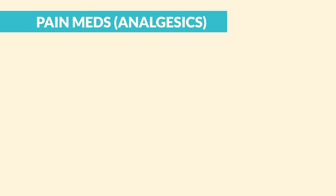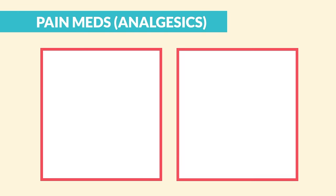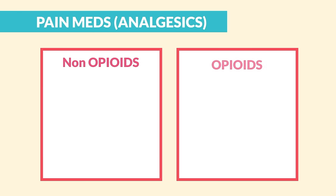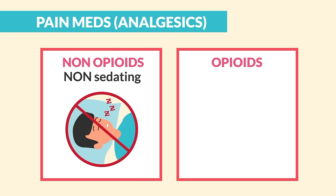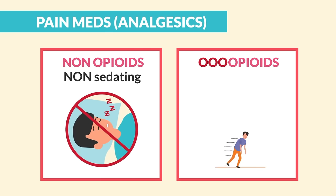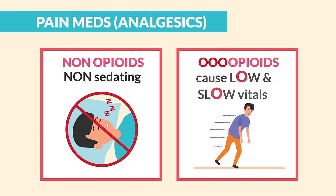Now, analgesics — aka our pain medications — we have two types: non-opioids as well as opioids. The biggest difference is that non-opioids are non-sedating, and opioids are sedating, causing everything to be low and slow.